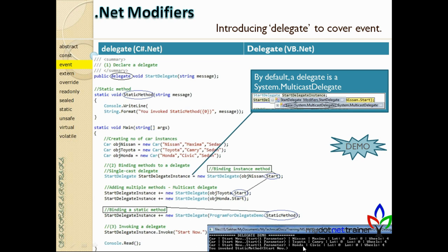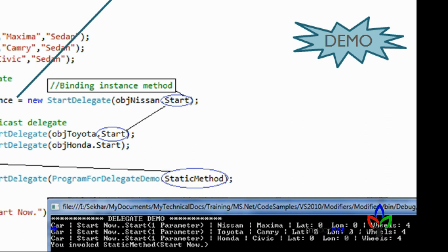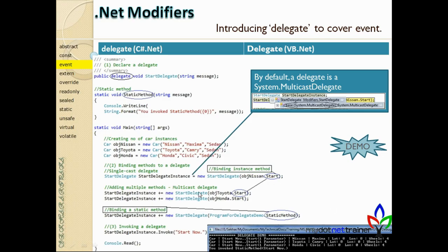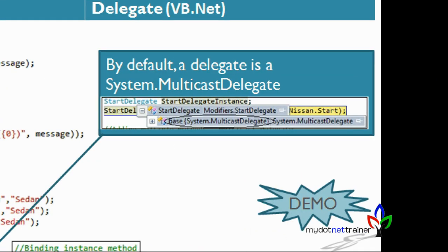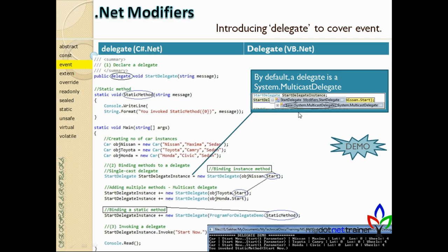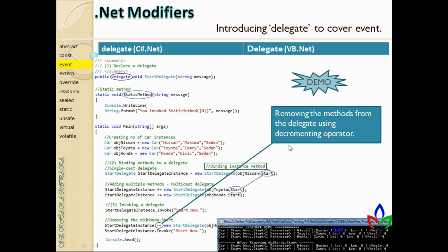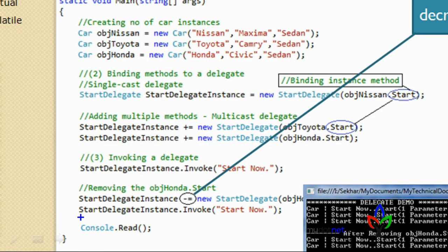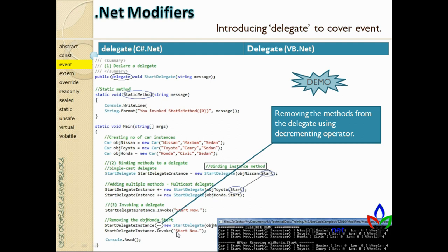To remove a method from the delegate's invocation queue, you use the decrement assignment operator (minus equals). That's the overview of delegates. The reason for recapping is that C# 2.0 adds more enhancements to the delegates available in the 1.0 or 1.1 framework.